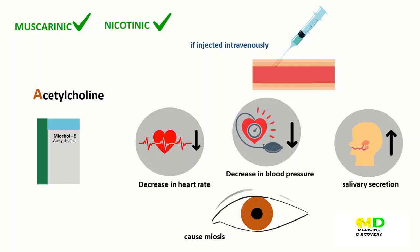Acetylcholine causes vasodilation and lowering of blood pressure. It stimulates M3 receptors, which increases salivary secretion, increases gastric acid secretion, and stimulates intestinal secretions and motility. In the eye, acetylcholine is involved in stimulation of ciliary muscle contraction for near vision and in the constriction of the pupillary sphincter muscle, causing miosis. Acetylcholine is instilled into the anterior chamber of the eye to produce miosis during ophthalmic surgery.